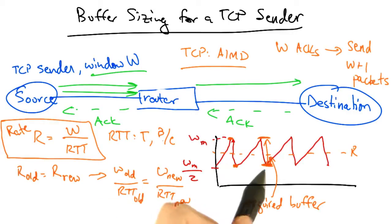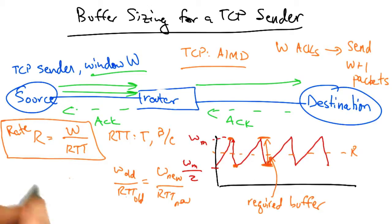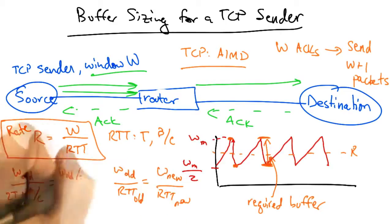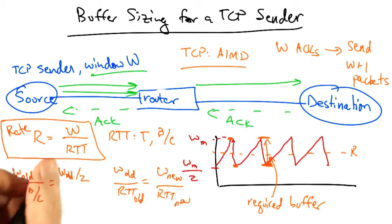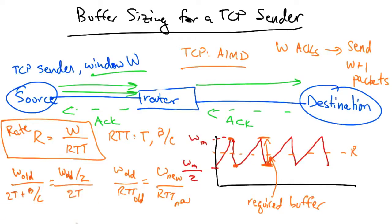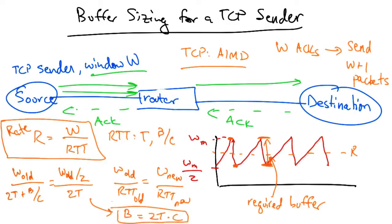We also know that after reducing the window, the queuing delay is 0. So we can replace the term on the left with W old over 2T plus B over C. And we can replace the term on the right with W old over 2, because the congestion window has been reduced by half, divided by 2T, simply the propagation delay with no queuing delay. Now if we solve this equation, we find that the required buffering is simply 2T times C.